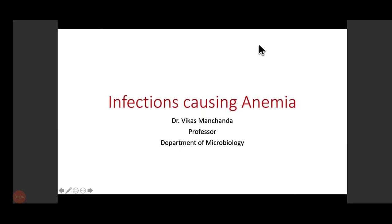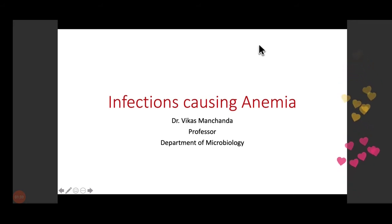Today we are going to discuss infectious causes of anemia. We are not going into the non-infectious causes, which include autoimmune diseases, chronic diseases like cancers, or nutritional deficiency due to malnutrition. We will deal with anemia caused by various infections — listing the causes, then focusing on one or two clinically important parasites, also important from your exam point of view, along with their life cycle, epidemiology, and treatment.